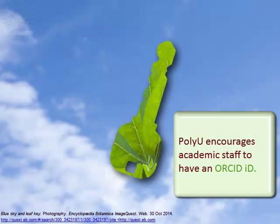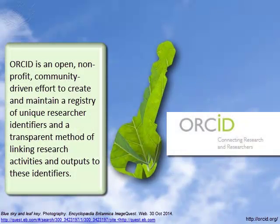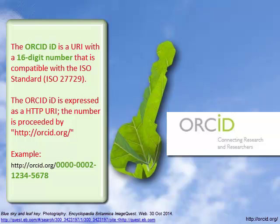PolyU encourages academic staff to have an ORCID ID. ORCID is an open, non-profit, community-driven effort to create and maintain a registry of unique researcher identifiers and a transparent method of linking research activities and outputs to these identifiers. It is a URI with a 16-digit number, expressed as a HTTP URI.